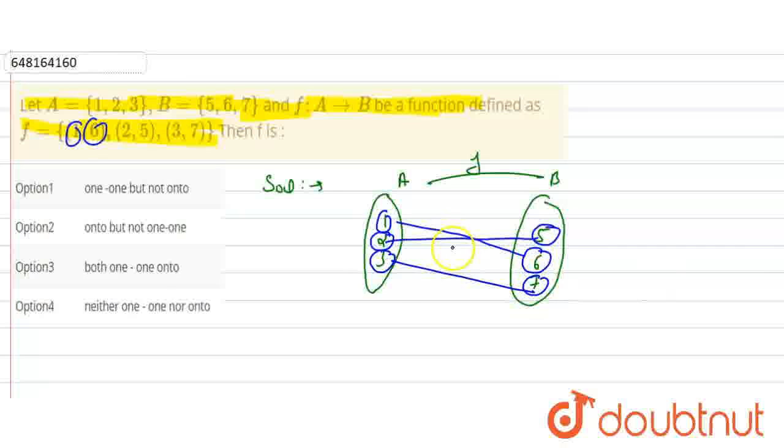One-one means that every element of A has one image in B. Clearly, every element of A has one image, so it is one-one.